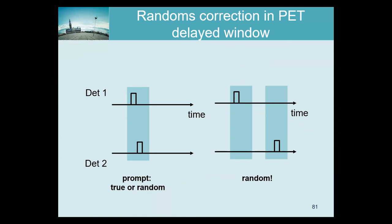This final slide is about randoms correction in PET. In PET we have problems with both randoms and scatter. Scatter is still a pain, but randoms can be estimated pretty accurately — they contribute noise but their effect on bias is negligible. Here is the basic idea: a detector sees a photon, and the system checks whether within the time window another detector has also seen something. If yes, the PET camera decides these two events are related and records a coincidence.